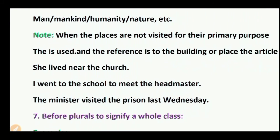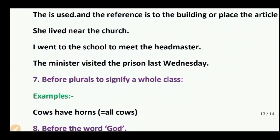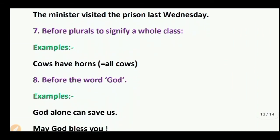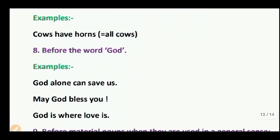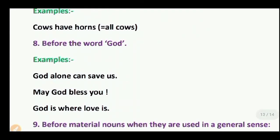Omission point 7: No article before plurals that signify a whole class. Example: Cows have horns — here 'cows' means all cows. Omission point 8: No article before the word 'God.' Examples: God alone can save us. May God bless you. God is where love is.